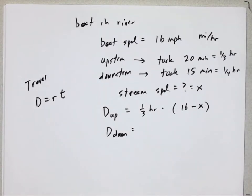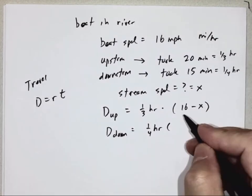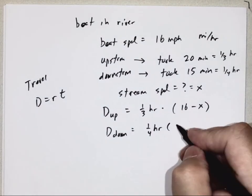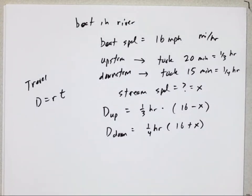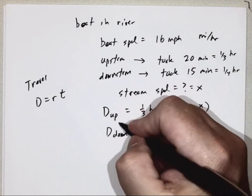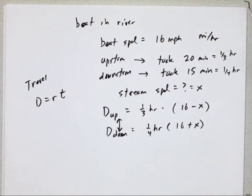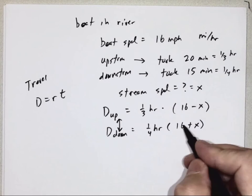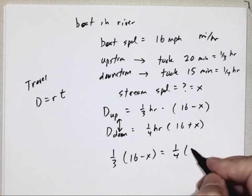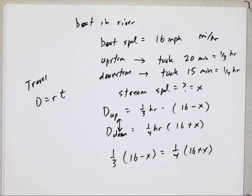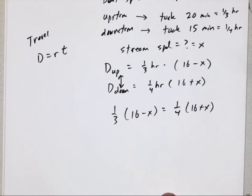For the distance the boat traveled downstream, the time is one fourth of an hour. The speed downstream — the boat can go 60, but now the stream speed X is actually helping it go faster, so you add: the speed is 60 plus X. Since it was a round trip, the distance upstream and distance downstream is the same. Therefore these two equations have to equal each other, and I can simply set them equal. Now I have a math equation which I can solve.